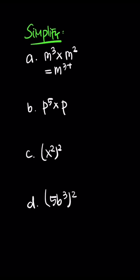Then that's m to the power of five. And then the second one: p to the power of five times p to the power of one. This is one exactly, it's not written there. So p power five plus one, then p power six.